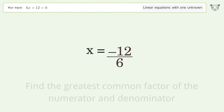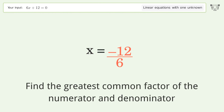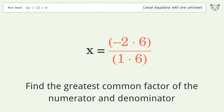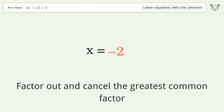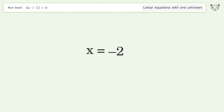Find the greatest common factor of the numerator and denominator. Factor out and cancel the greatest common factor. And so the final result is x equals negative 2.